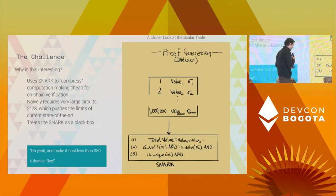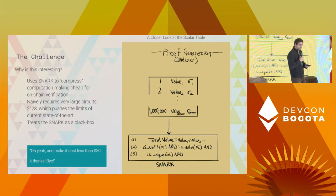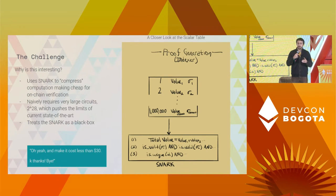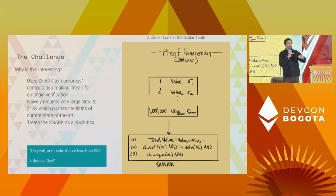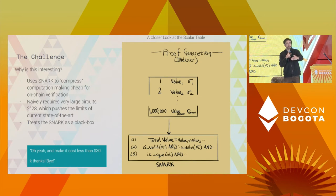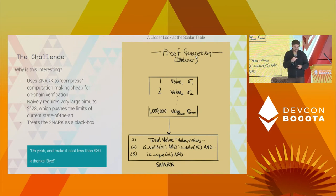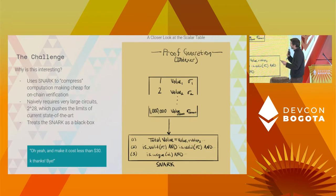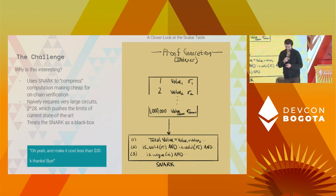Another really interesting thing about this primitive: we're trying to use a Snark as a black box. We don't want the Snark to impose any extra requirements on the protocol itself — we just want the Snark to be a black box: plug in a scalar table, get out a proof, that proof goes on-chain and you can verify it, without impacting the security of the system. And then the business side of this: can you make the whole process of proving and verifying cost less than $30? Otherwise it's not very useful to the indexer.